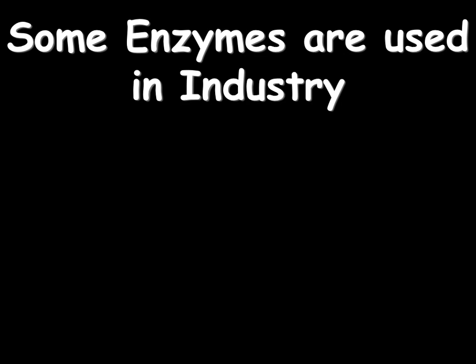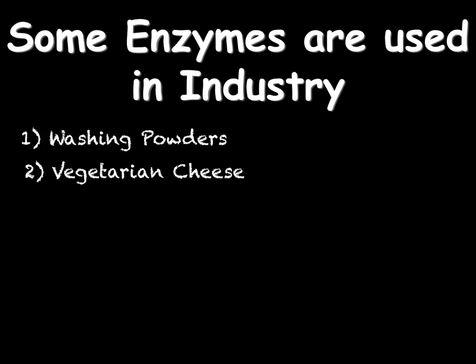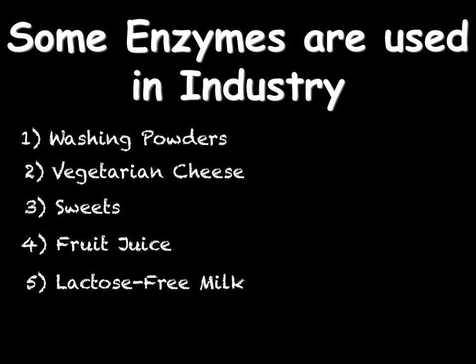For B3 you need to know about how enzymes are used in industry. The five uses you need to know about are: how they are used in washing powders, how they are used to make cheese for vegetarians as well as in sweets, how they are used to make fruit juice, and finally how they can be used to make lactose free milk.